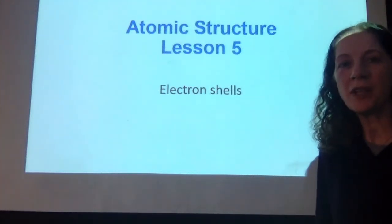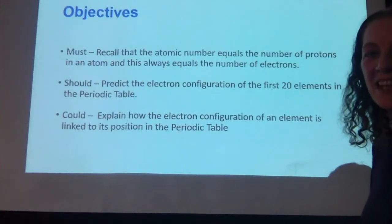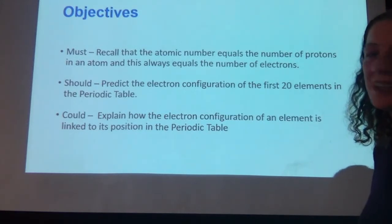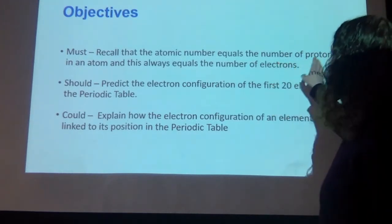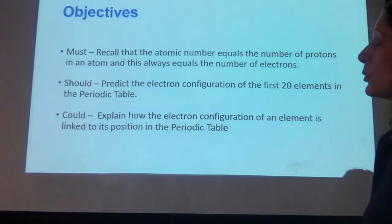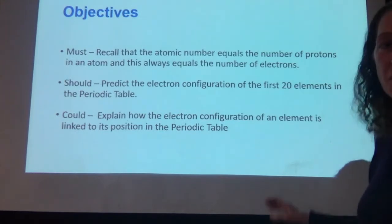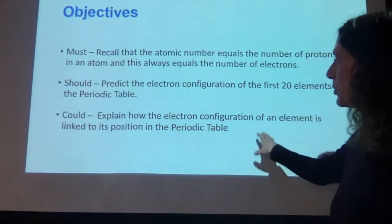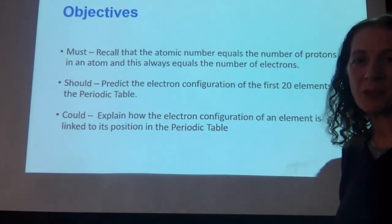Morning everybody. Today we're going to move on to lesson number five on atomic structure. We're going to start by reminding ourselves what the atomic number is — it's the number of protons in an atom, and it always equals the number of electrons in an atom. We're then going to move on to something called electron configuration and show how that can be used to predict where an element is in the periodic table.